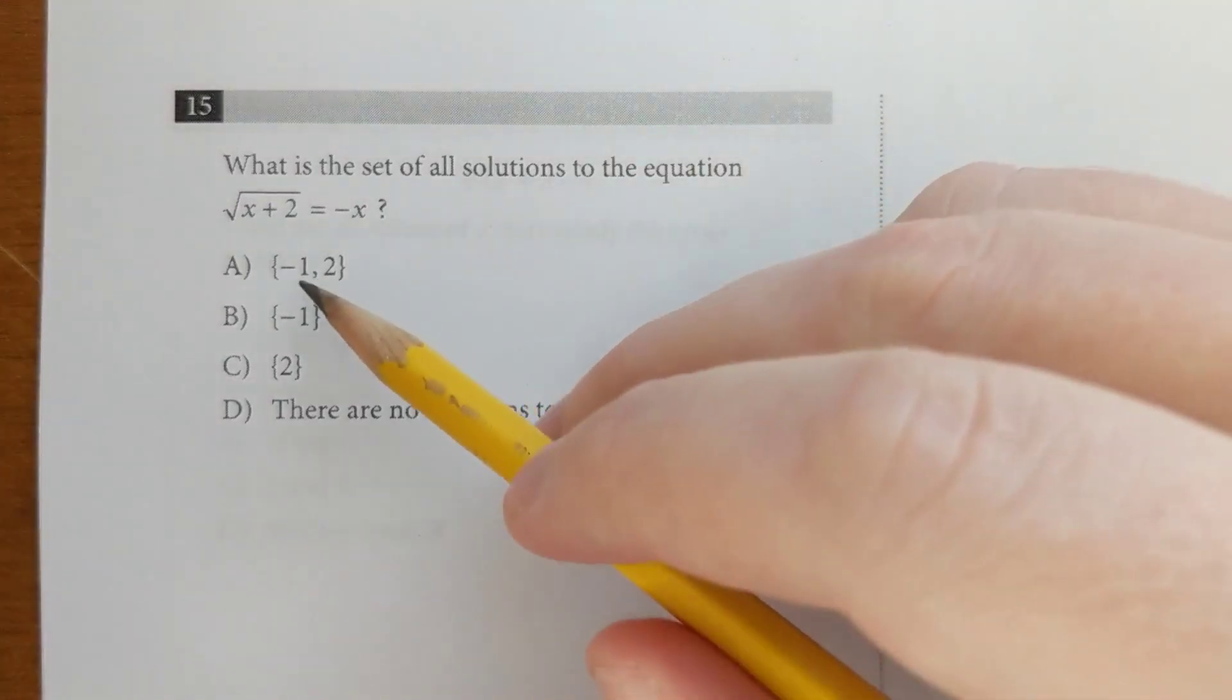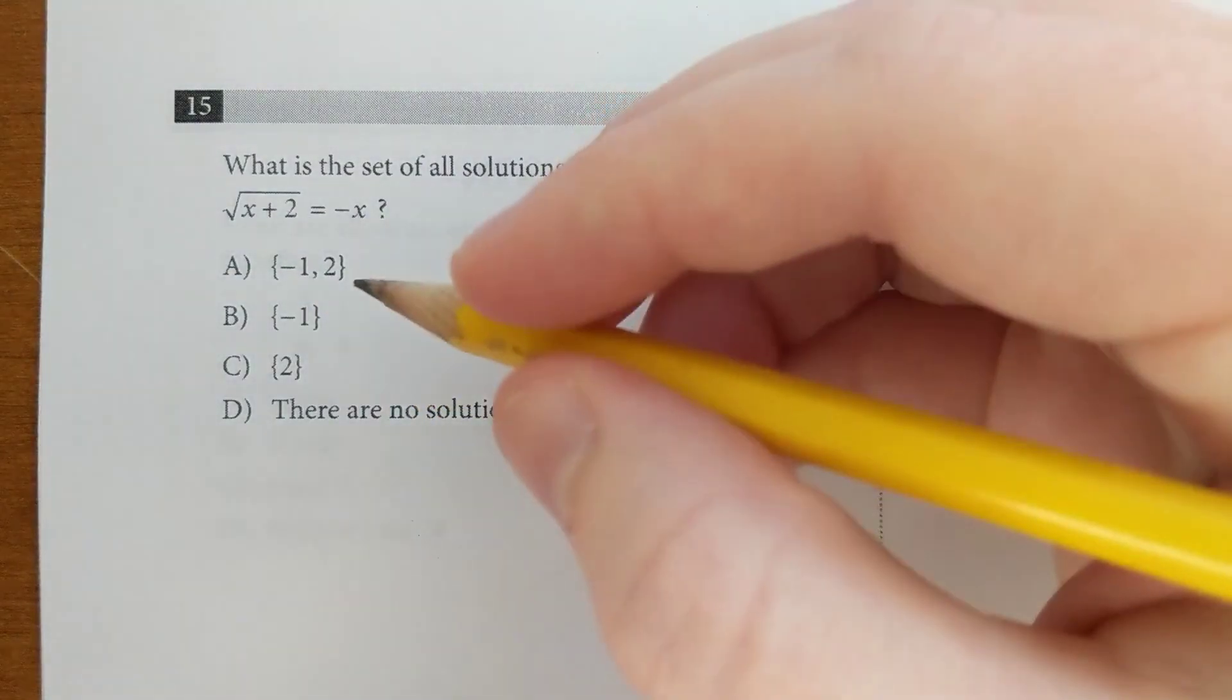So here for example, there are only two answer choices, negative 1 and 2. Let's just try them both out.